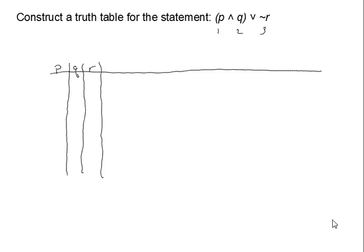The easiest way to remember how to construct this truth table is the following. I recommend that for the P column, you put four trues and then four falses. For the statement Q, instead of going four and four, you're going to go two and two — so two trues, two falses, two trues, two falses.